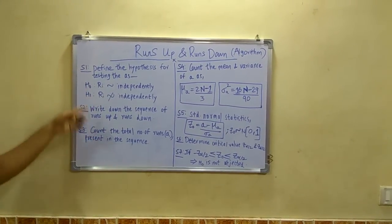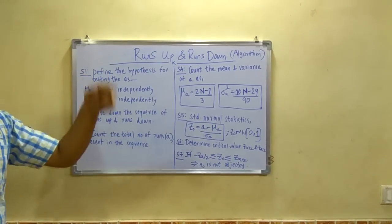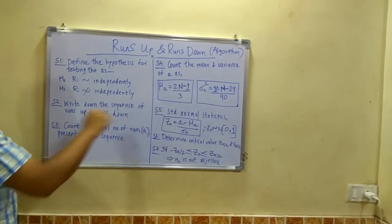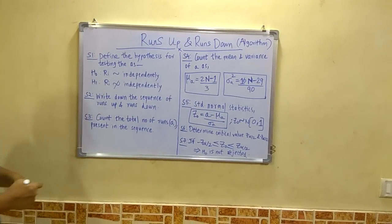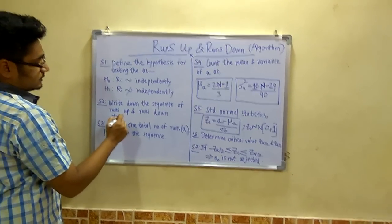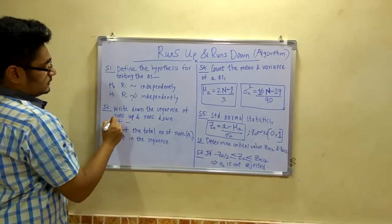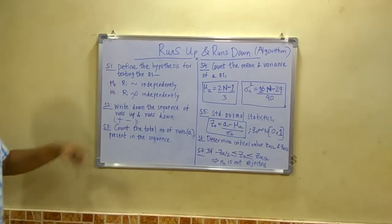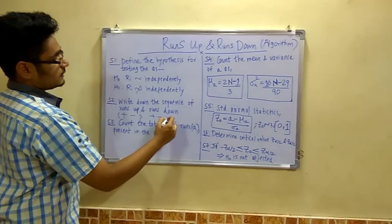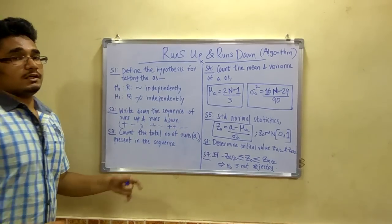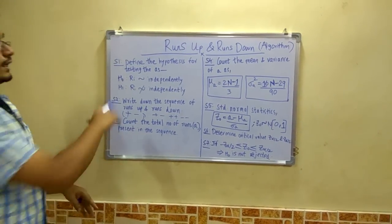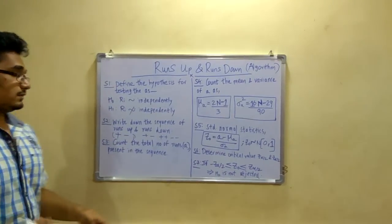So first we have to define two hypotheses: that ri is independently distributed and ri is non-independently distributed. Now step 2, you have to write down the sequence of runs up and runs down. Now this sequence is like you have to write plus or minus. If two numbers of same range come then you have to write plus plus or minus minus. Now this I will be covering in my next tutorial. So right now you just understand the sequence is the plus minus sequence.